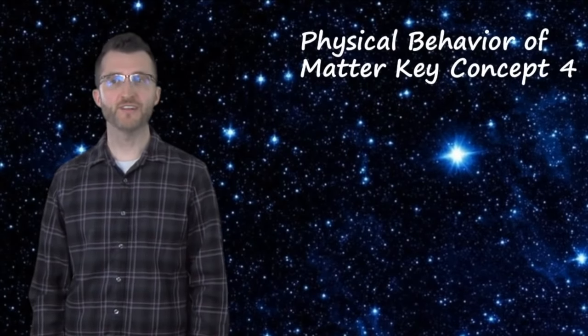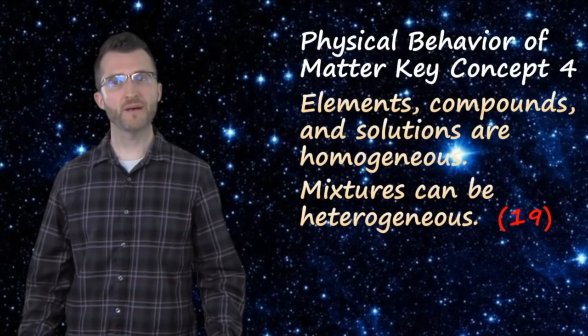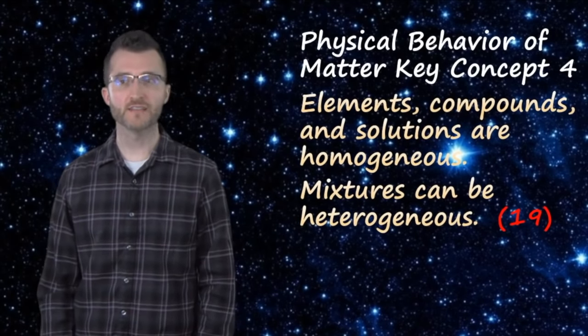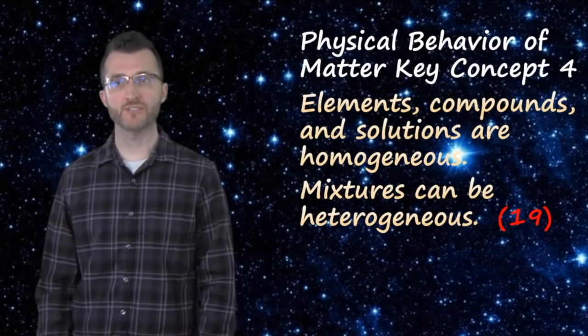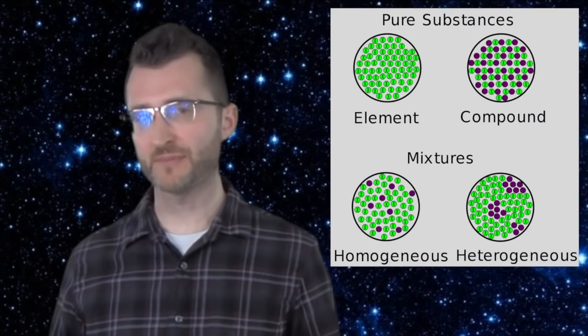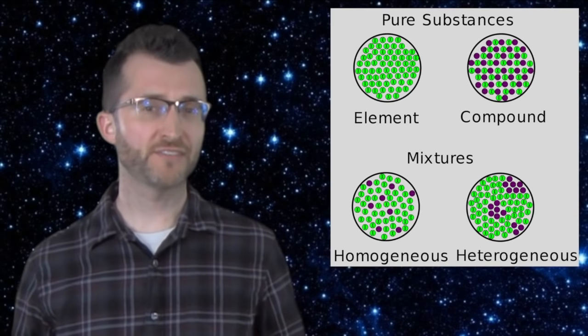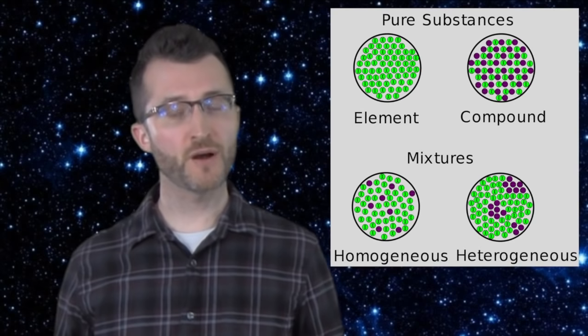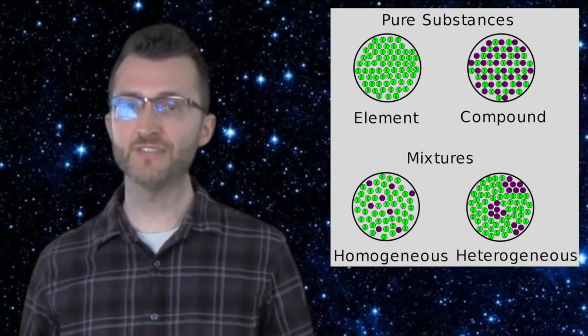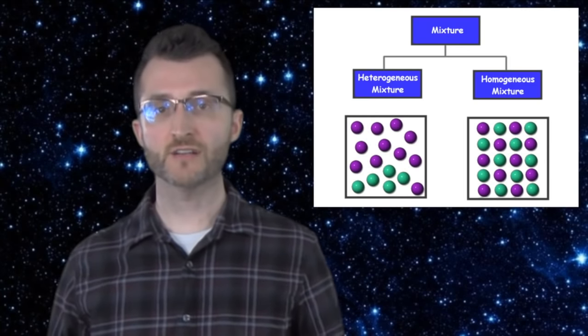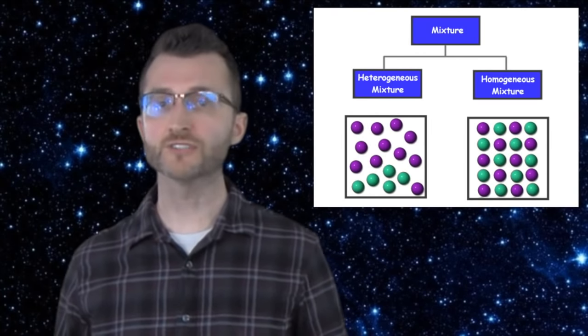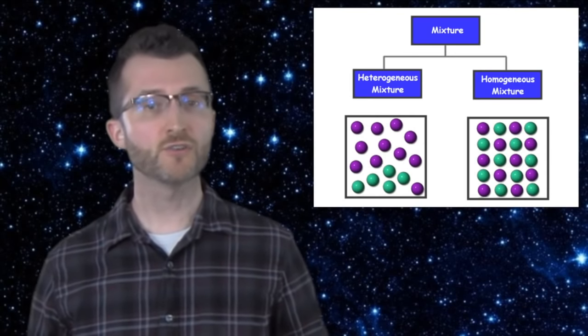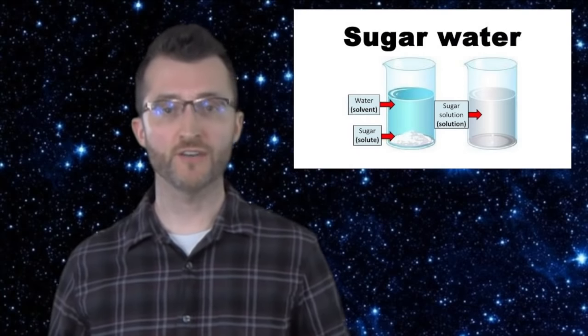Physical behavior of matter, key concept four. Elements, compounds, and solutions are homogeneous. Mixtures can be heterogeneous. Elements and compounds are both pure substances, so by default they have to be homogeneous. Homogeneous means that there's a uniform appearance based on an even distribution of particles. Mixtures can be homogeneous or heterogeneous. A homogeneous mixture, also known as a solution, is going to look the same throughout and examples include air or sugar dissolve in water.